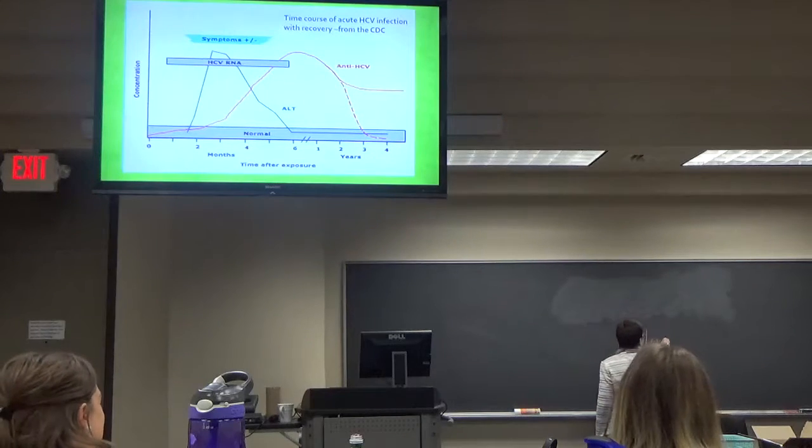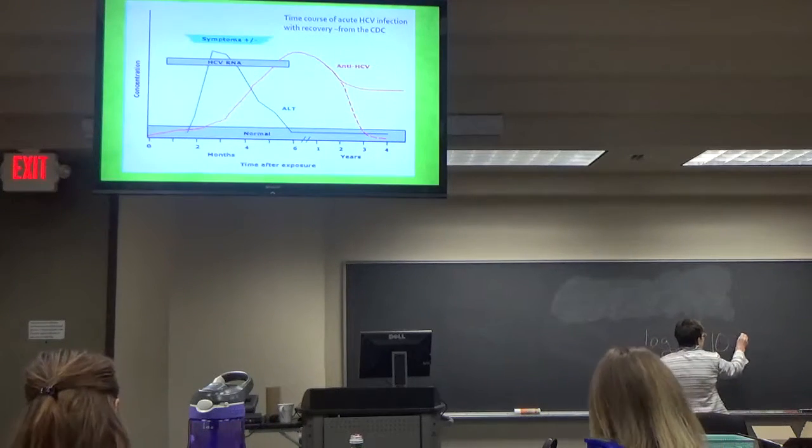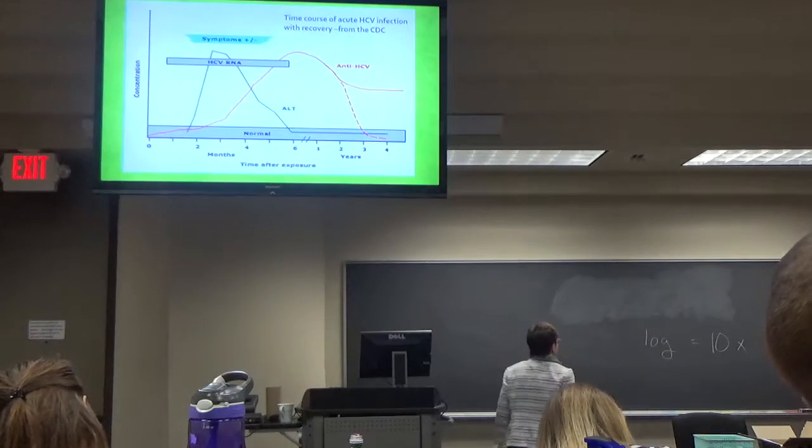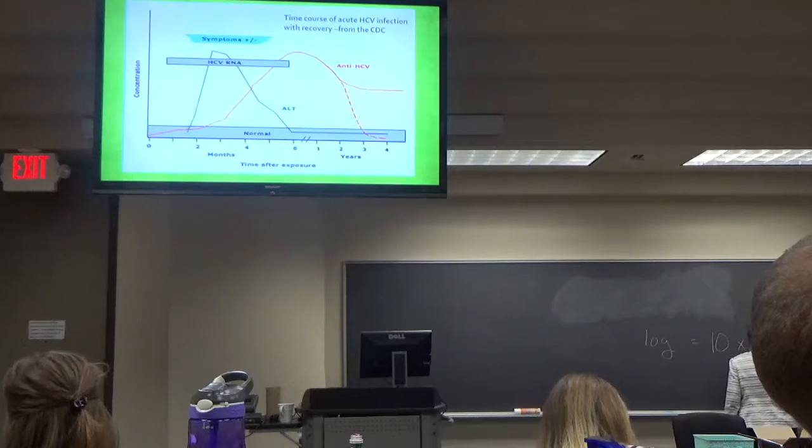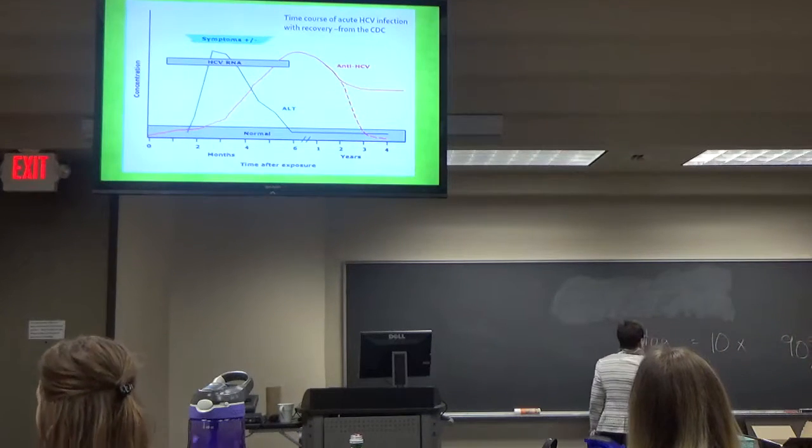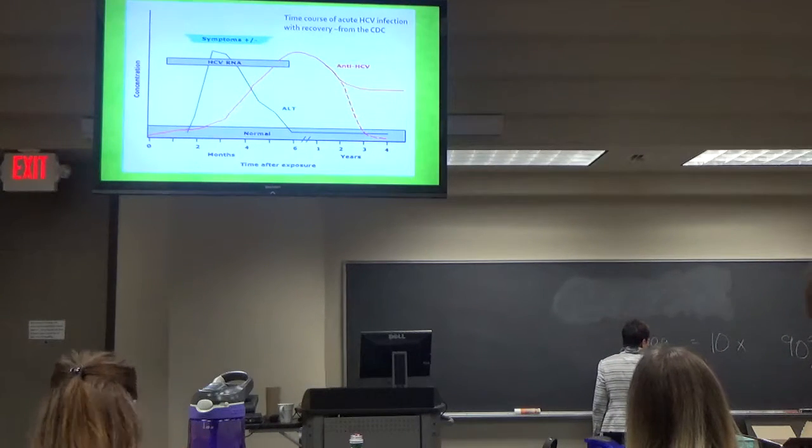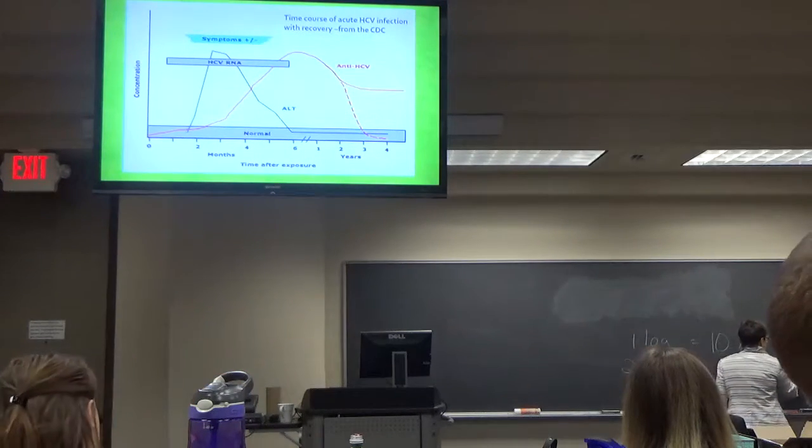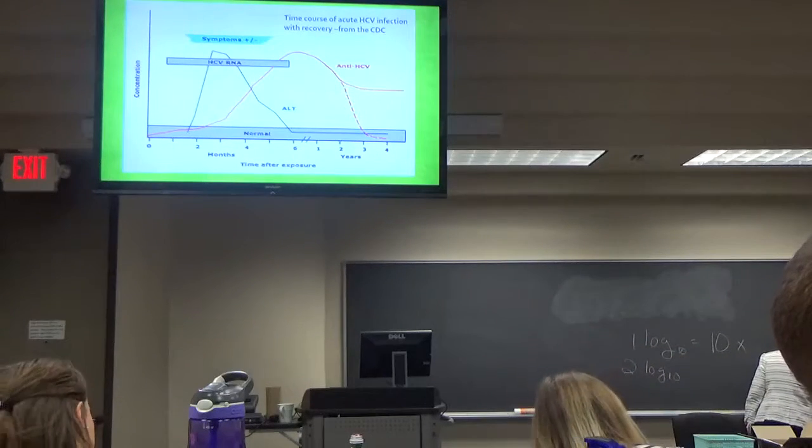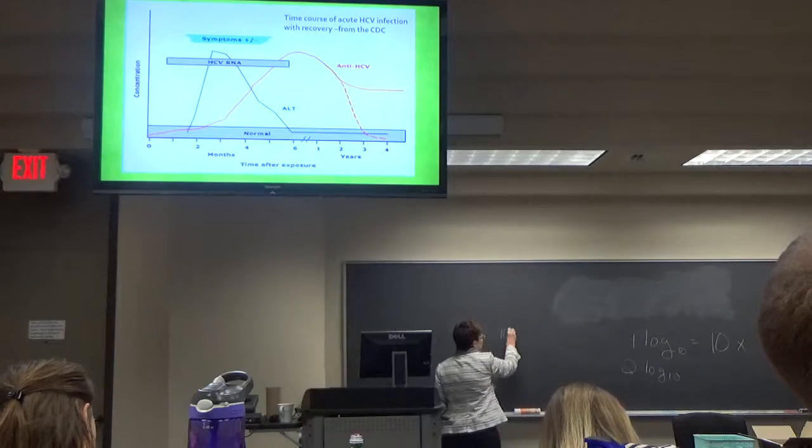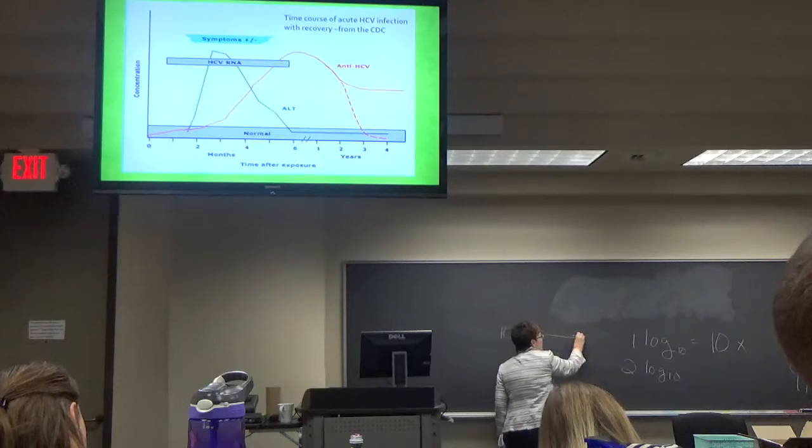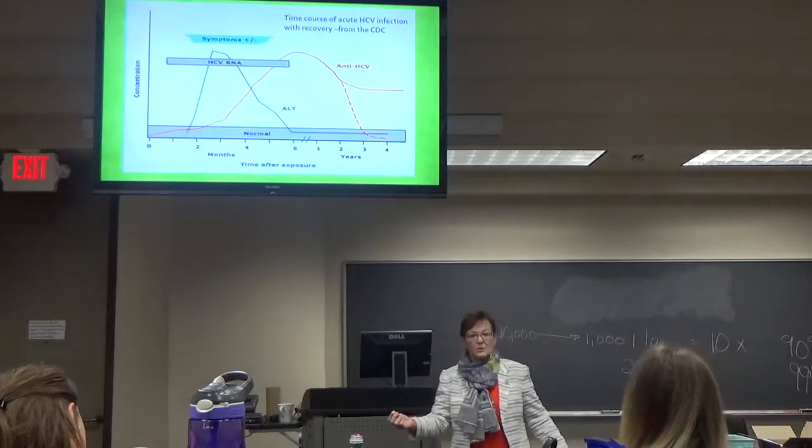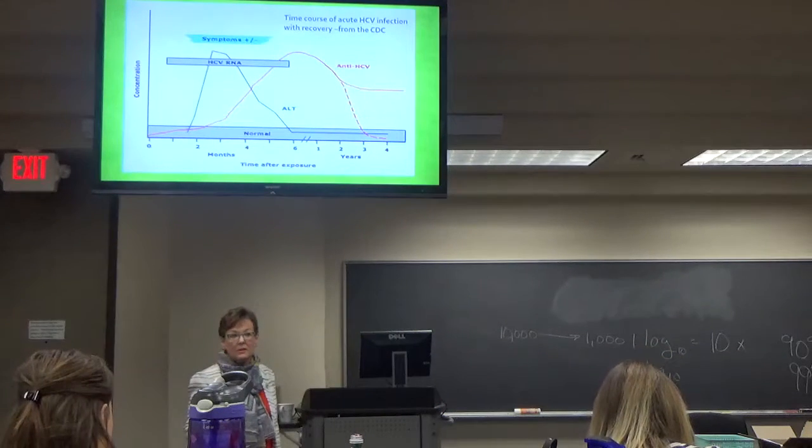So logs represent a tenfold change. So they're a way to deal with big numbers. So if you had a, this means you've had a ninety percent change. What's a two log ten change? Ninety-nine percent. So in real numbers, this would be if you went from 10,000 to 1,000, you had a one log change. Or the opposite. You go from 1,000 to 10,000. It's a tenfold change.